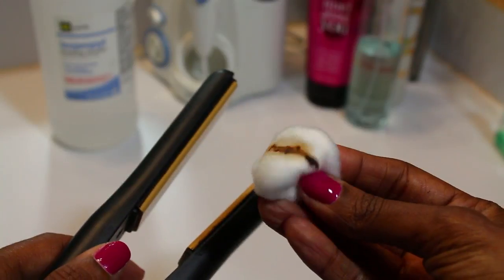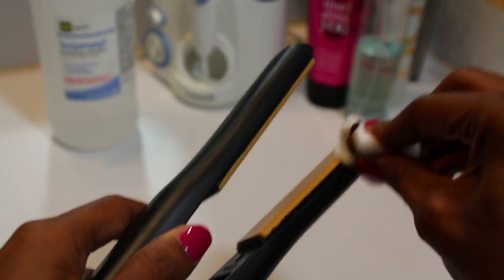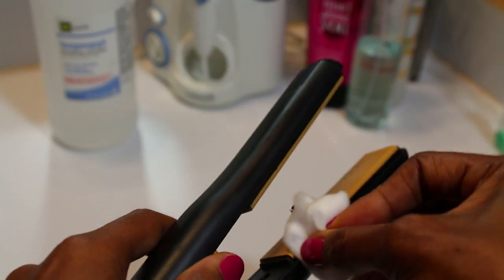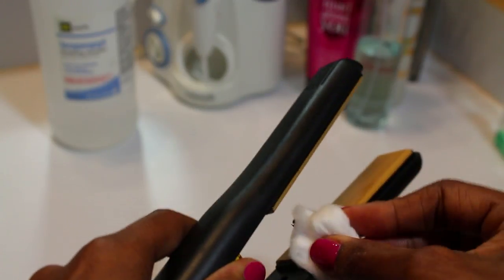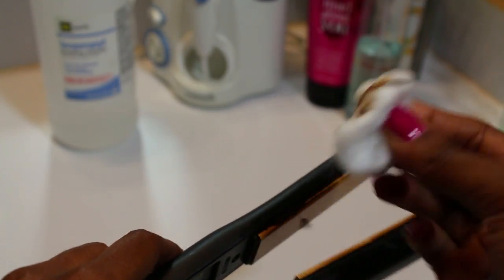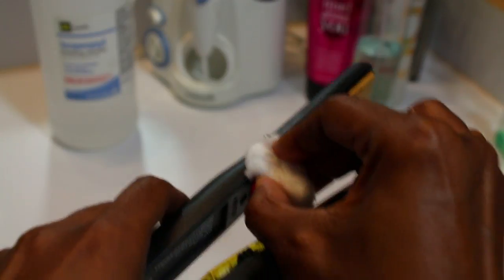You can see there that it's coming off really well. I'm not having to use a lot of elbow grease to get this off. Some little spots may require a little more pressure to get them off just because it's been on there longer. Then you're just going to do that on the other side as well.